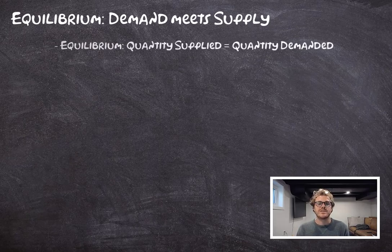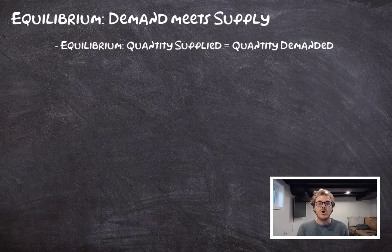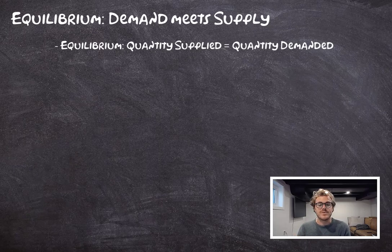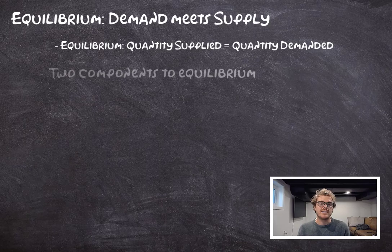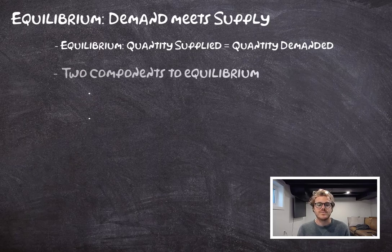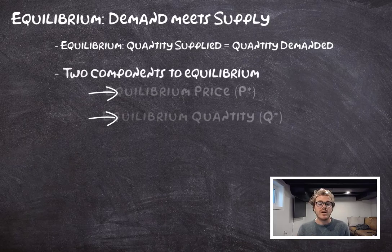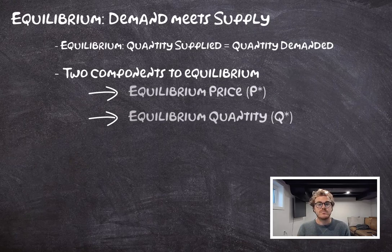Graphically, the equilibrium point is going to be the intersection of the upward sloping supply curve and the downward sloping demand curve. This equilibrium has two different components: an equilibrium price and an equilibrium quantity. The equilibrium price is the price that causes quantity supplied to be equal to quantity demanded. The equilibrium quantity is the numerical quantity which is the quantity supplied and quantity demanded — the same thing at the equilibrium price.